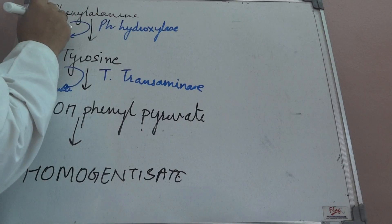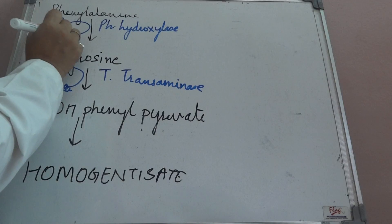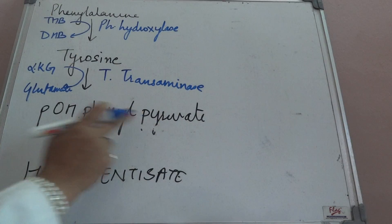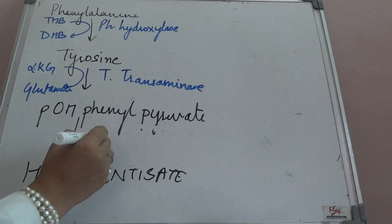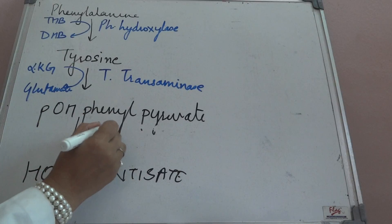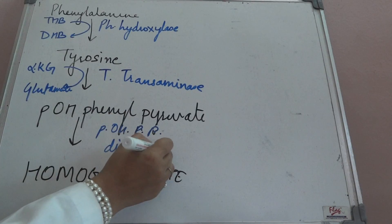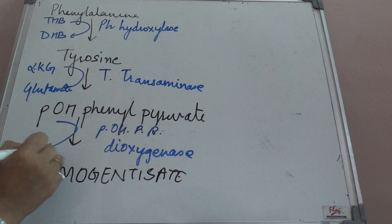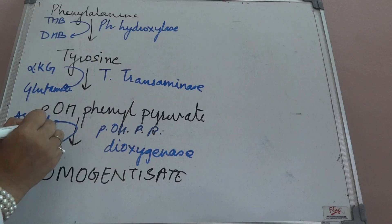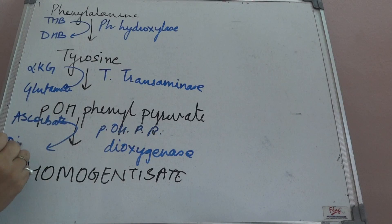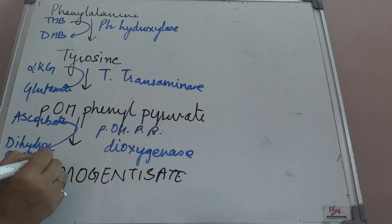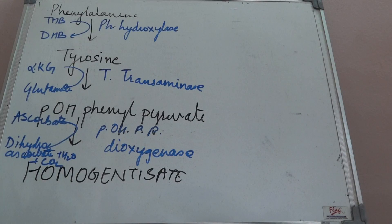Parahydroxyphenylpyruvate forms homogentisate in the presence of the enzyme parahydroxyphenylpyruvate dioxygenase. Wherever we have a dioxygenase we require ascorbate, which converts to dihydroascorbate, plus water and carbon dioxide. Homogentisate is a very important landmark in this cycle — it is not formed anywhere else in biochemistry.